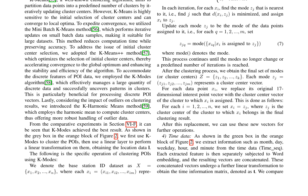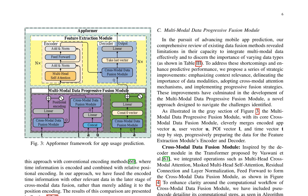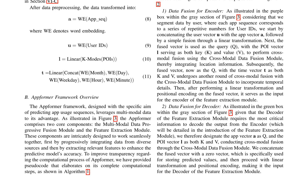The Appformer framework, a predictive model for app usage sequences, harnesses the power of multimodal data. It consists of two key components: the multimodal data progressive fusion module and the feature extraction module. The multimodal data progressive fusion module integrates encoded app vector, user vector, POI vector, and time vector in a stepwise manner, preparing the data for the feature extraction module's encoder and decoder. Inspired by the transformer's decoder module, the cross-modal data fusion module enhances clarity around the computational workflow, with the fusion process significantly improving the predictive accuracy of app usage sequences.